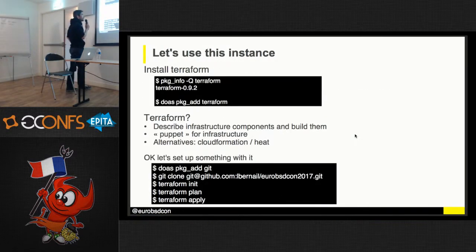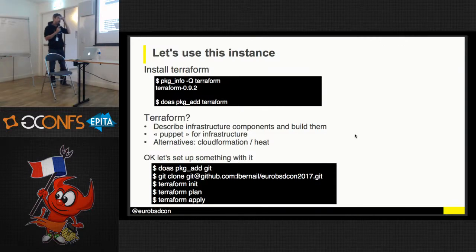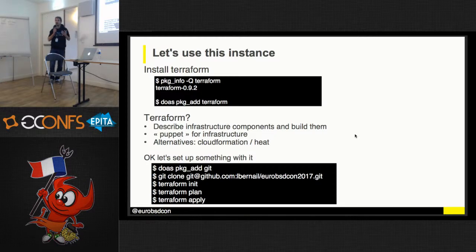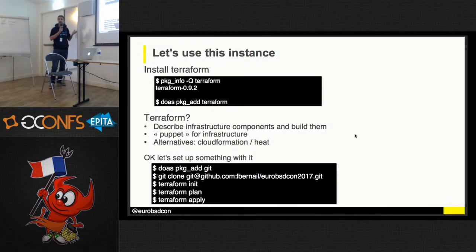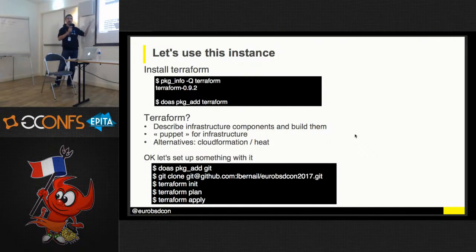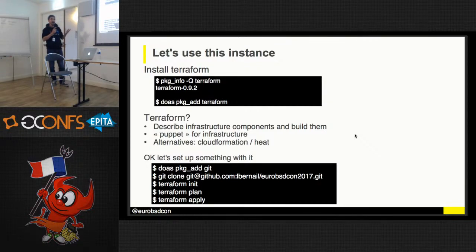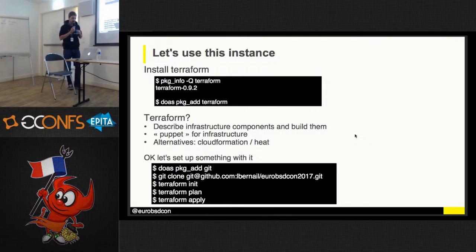Now that we have an instance, we're going to try and do a few things with it. First, I'm going to install Terraform, clone a repository, and do a few things. For those who don't know Terraform, it's a tool to describe cloud infrastructure components and build them in a repeatable way — think of it as Puppet, but instead of configuring services inside servers, it configures infrastructure. You have alternatives like CloudFormation (AWS-specific) and Heat (developed for OpenStack), but Terraform is becoming the standard. It's also supported by GCP, Azure, and OpenStack.